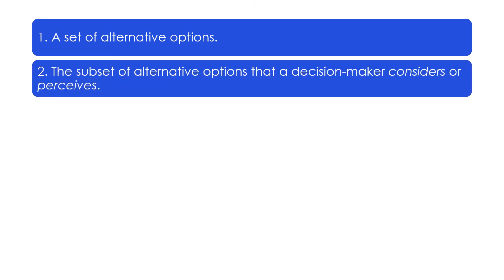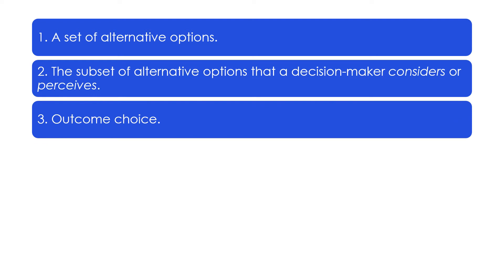Second, the subset of alternative options that a decision-maker considers or perceives — this is our considered subset of the choice set. The reason we differentiate the considered choice set from the full choice set is that we make our choice within a set of alternatives more limited than the full choice set objectively available to us. Third, outcome of choice. Simon didn't differentiate between actual outcomes and perceived outcomes. In later models, other scholars differentiate actual outcomes, also known as actual utility, and expected outcomes, also known as expected utility.